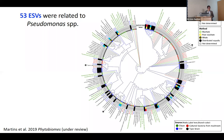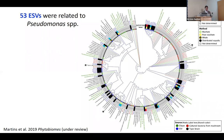We also analyzed ESVs — exact sequence variants. We found 53 that correspond specifically to Pseudomonas, and compared these ESVs with type strains, cliques, and bacteria isolated from mushrooms that were proven pathogenic. In the phylogenetic tree, blue ESVs are distributed throughout, meaning there is a big diversity of ESVs related to Pseudomonas. Some are close to type strains of known pathogens, marked with asterisks, which we potentially would not want to isolate. We want something distant from the pathogens.